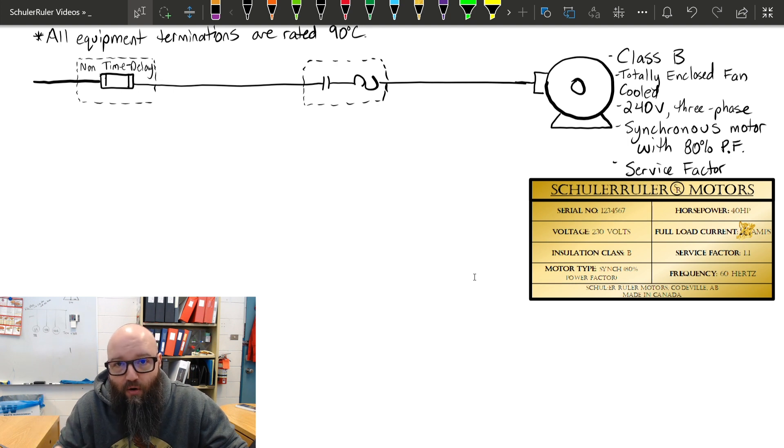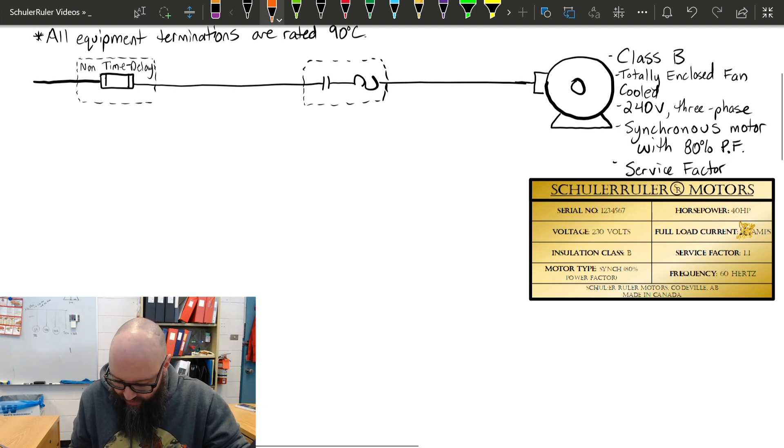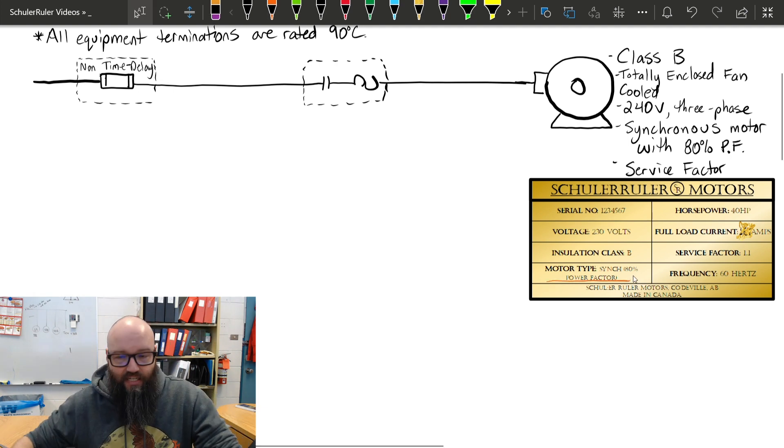If this was a synchronous motor with a unity power factor, we could just take our horsepower and our rated voltage, our nominal voltage with the corresponding column, and we could just pick an FLA based straight off of that. But if you look at the nameplate value here, our nameplate states that this is a synchronous motor with an 80% power factor.